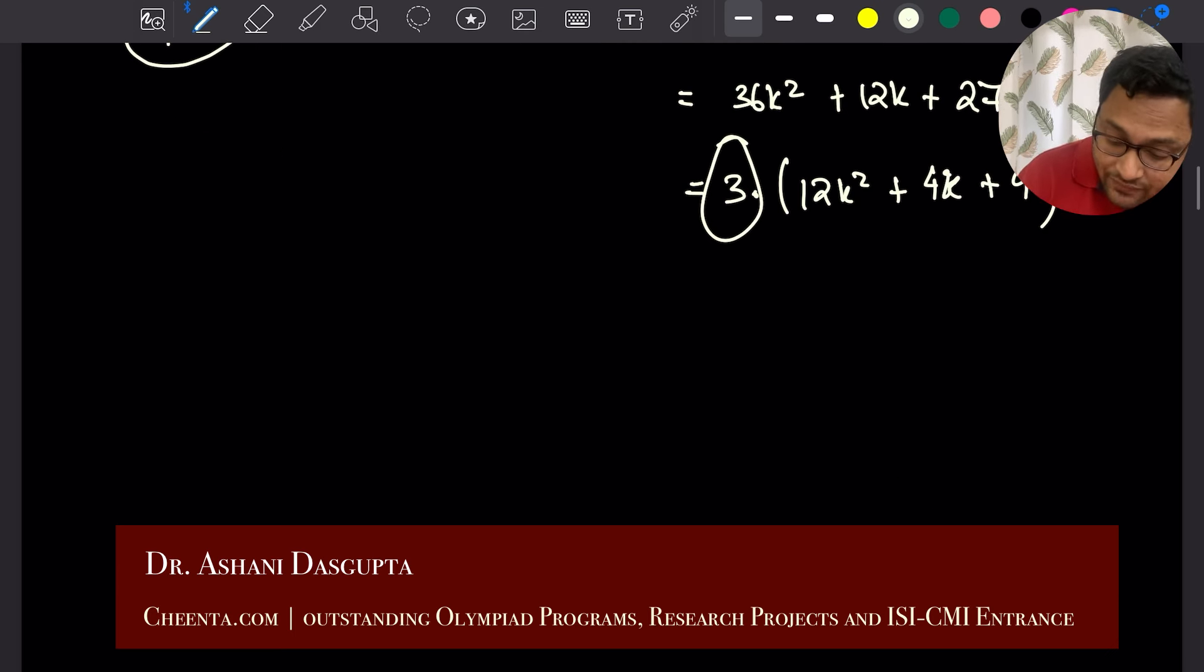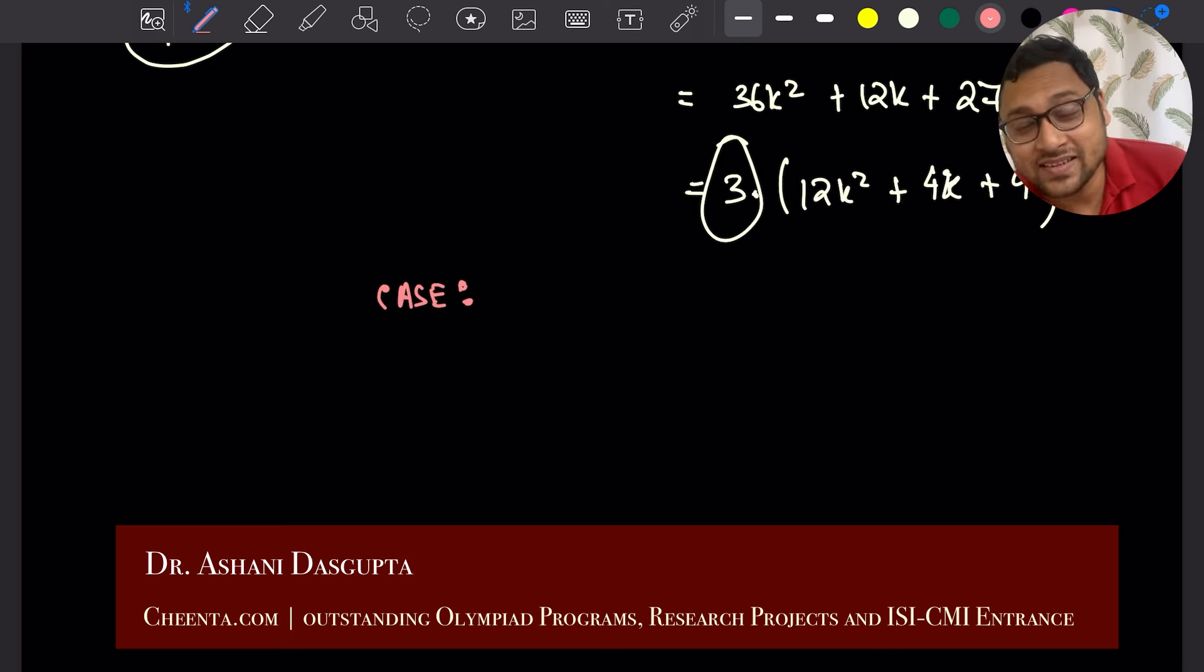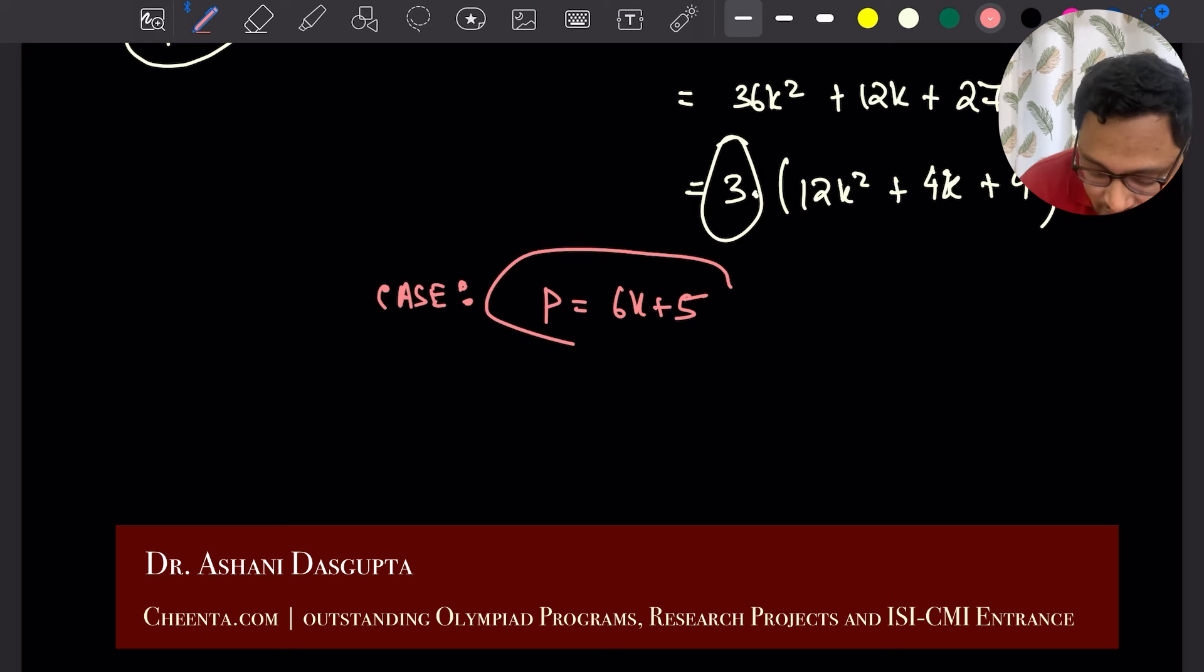The other case that you have to check, you can do this in the comment section. We often award best commenters with a book or a little scholarship to our programs. You can try to make as many comments as you can. We want more interactions. That's how mathematics becomes fun. Check the case where p is of the form 6k plus 5. Tell me how that is not a prime number for any value of p.